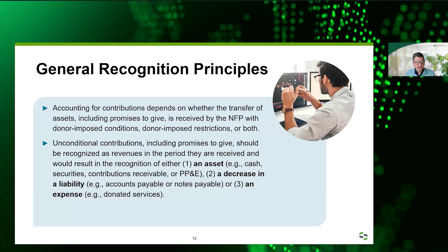Let's get into recognition. Accounting for contributions depends on whether the transfer of assets, including promises to give, is received by the not-for-profit with either donor-imposed conditions, donor-imposed restrictions, or both. When something is unconditional — including unconditional promises to give — we basically recognize those revenues in the period it's received. The debit side of the journal entry could be cash, securities, appreciated securities, a contribution receivable in the case of a promise to give, or some sort of other asset or gift in kind account. You could also decrease a liability — sometimes somebody gives by forgiving, reducing accounts payable or a note payable.